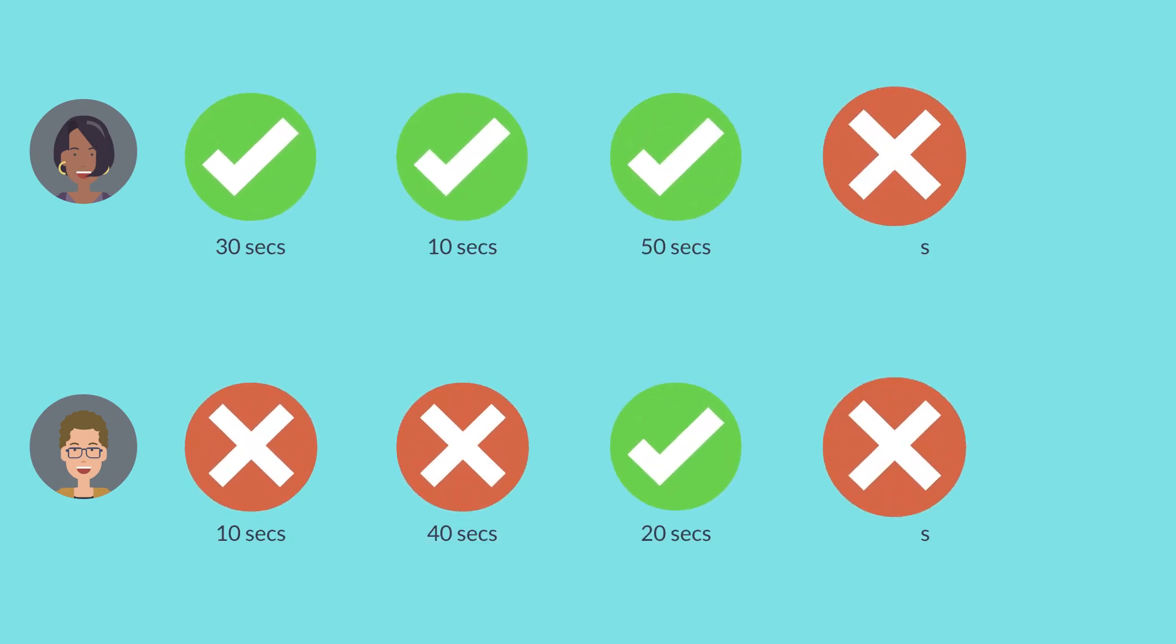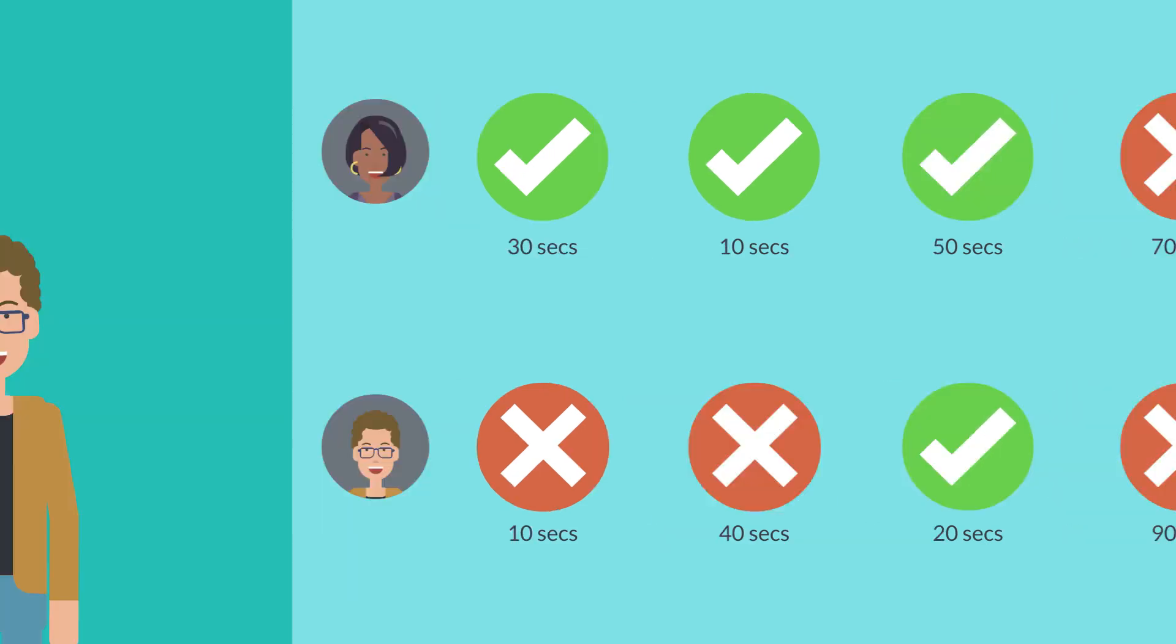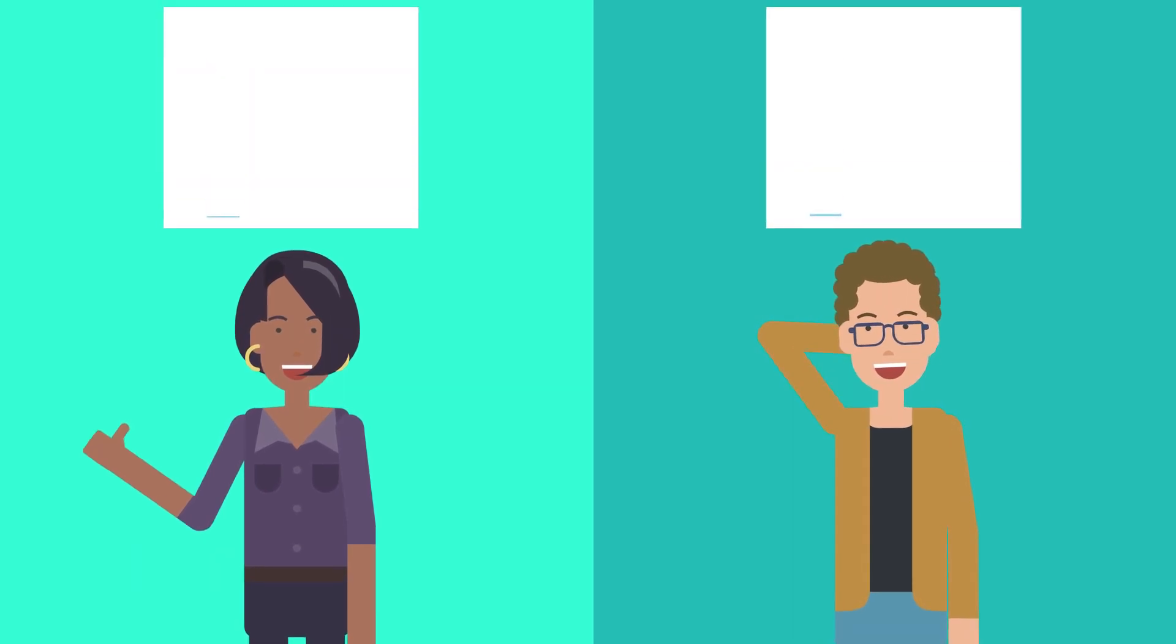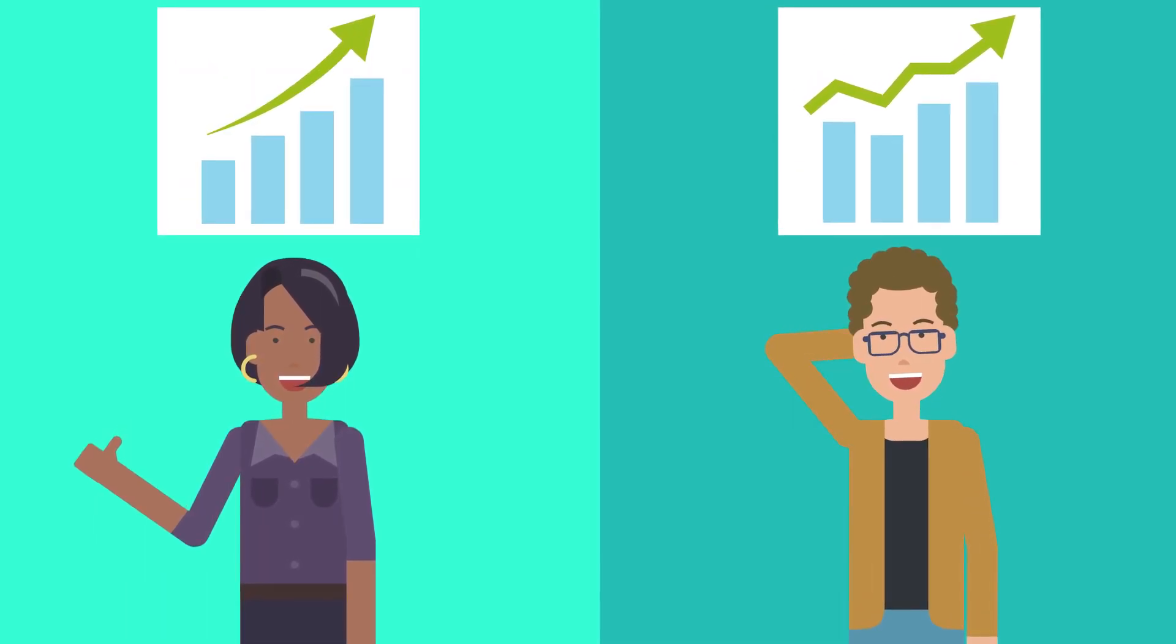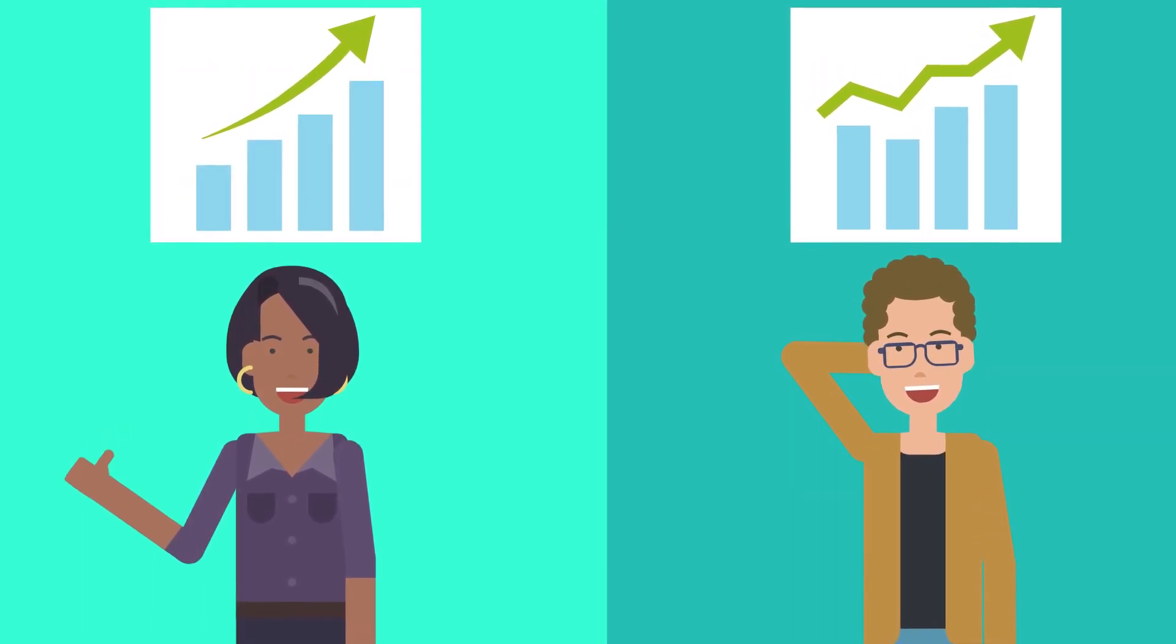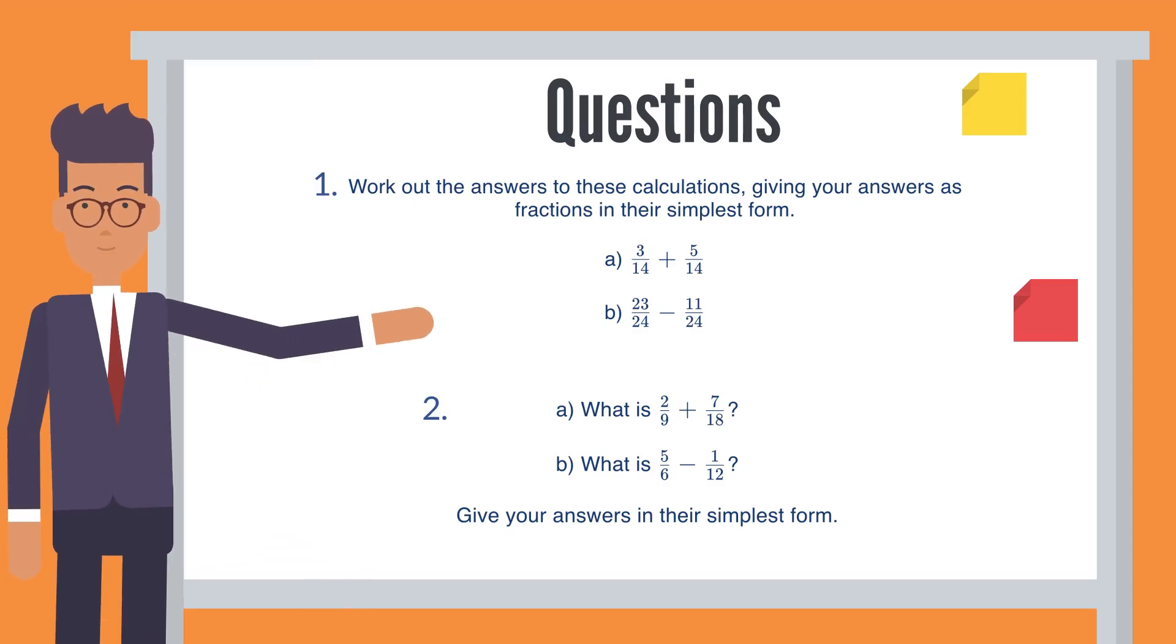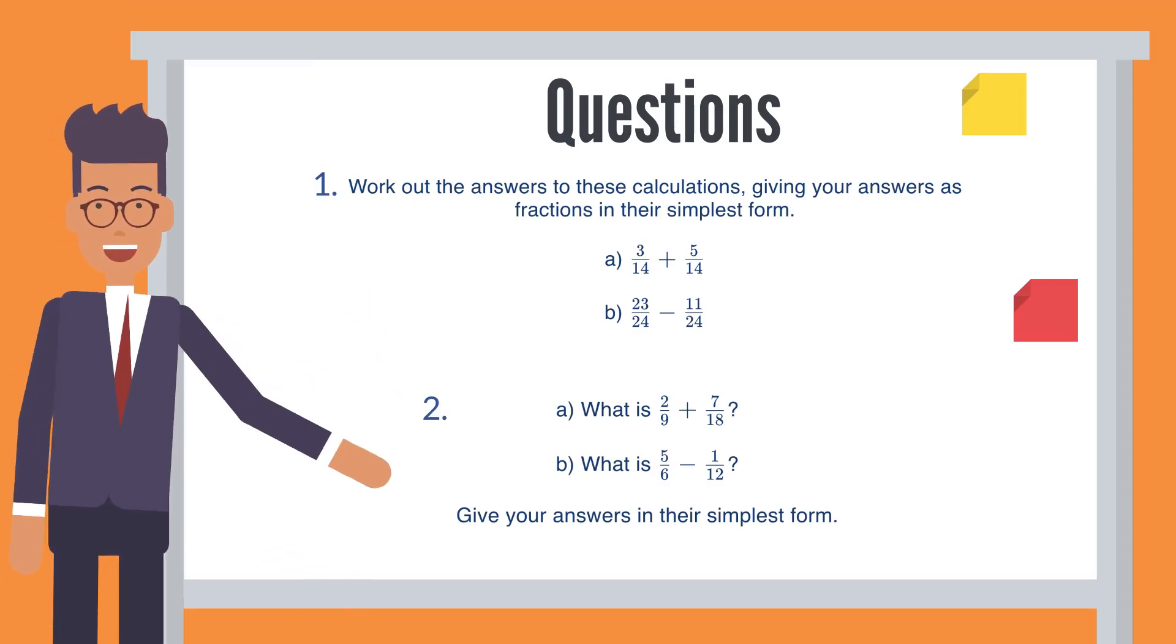we use a combination of the topics added into the homework by the teacher and a statistical model which uses the students' previous answers and how long they've taken. This combination allows us to understand how well they know topics and how much support they might need.